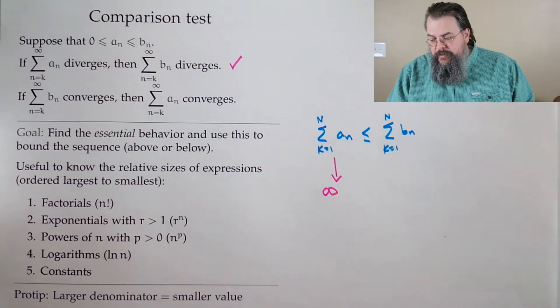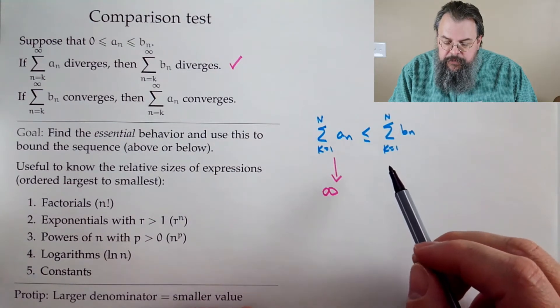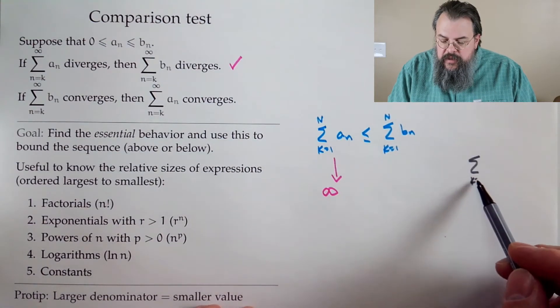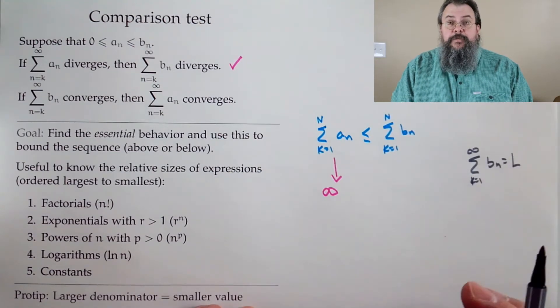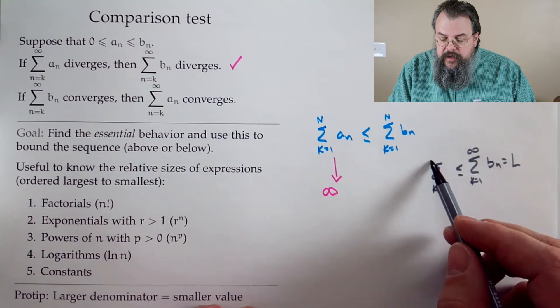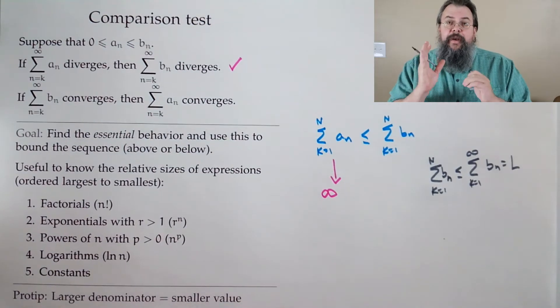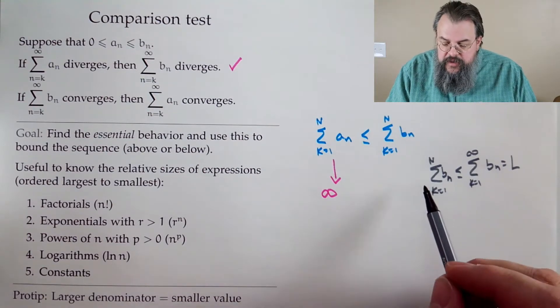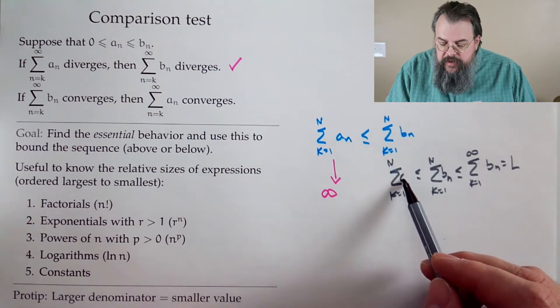Now, if we wanted to be slightly more rigorous, we could say, let's look at the following. We know that we're in the situation now, where the sum k equals one to infinity b sub n is equal to something. It's equal to L. Well, that's greater than or equal to our finite sum, right? Because all the terms are greater than or equal to zero. So if I'm adding, then I stop, the rest of it can only make it bigger, can't make it smaller.